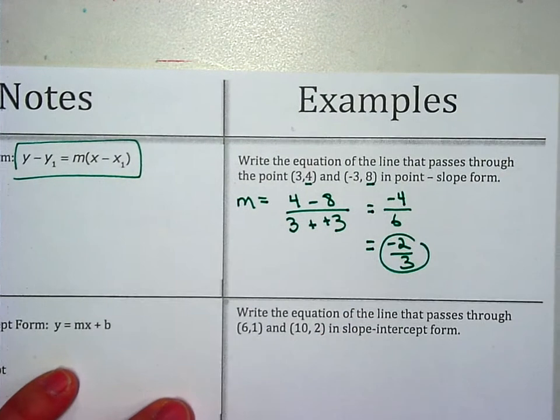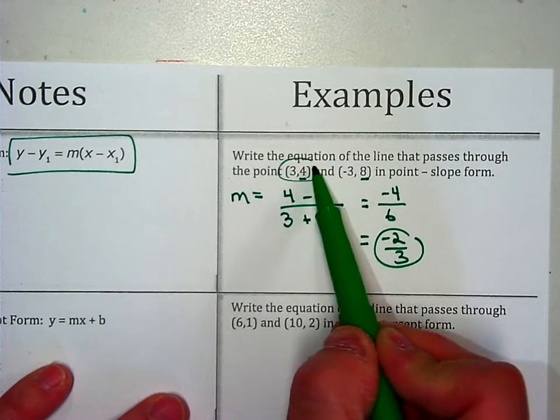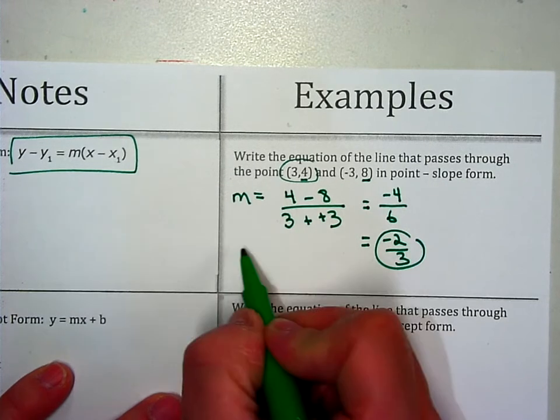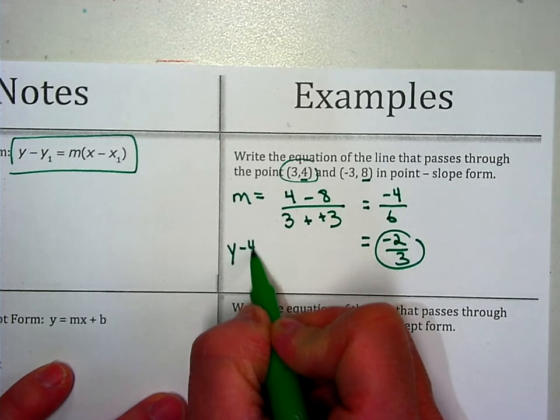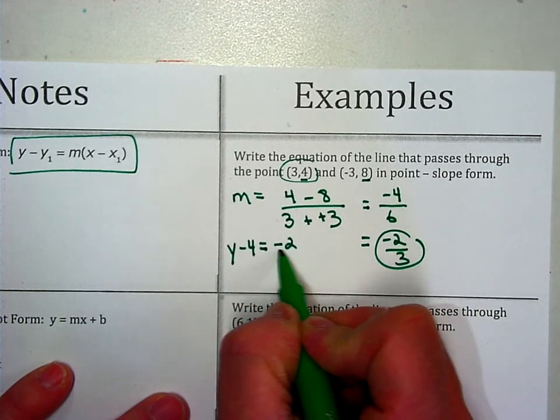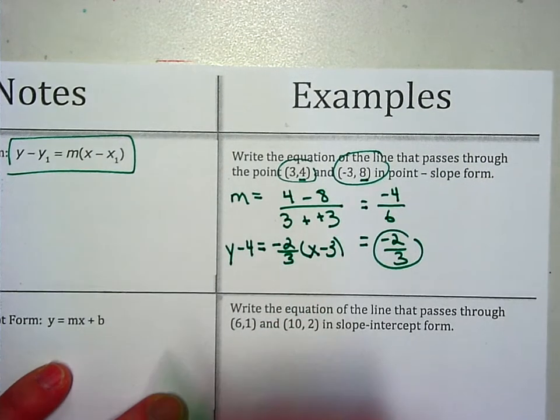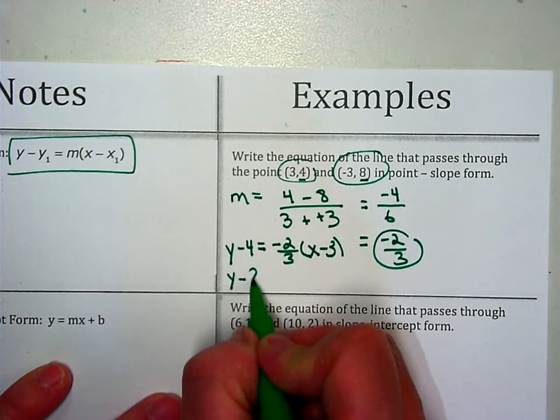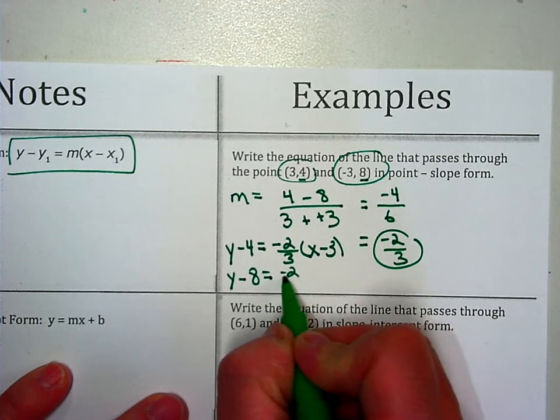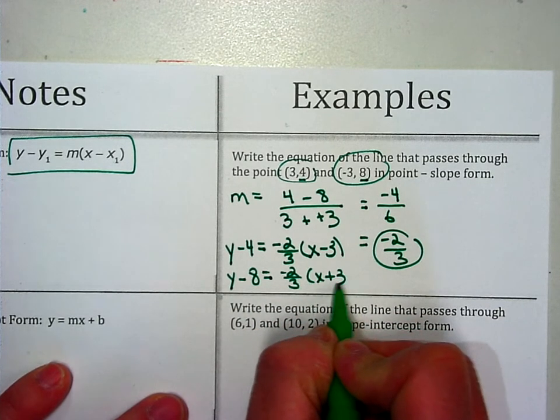Once you have the slope, you pick one of the points to use. It doesn't matter. If you use (3, 4), your equation can be y minus 4 equals negative 2 thirds times (x minus 3). If you use (negative 3, 8), you can do y minus 8 equals negative 2 thirds times (x plus 3). Either answer is fine.